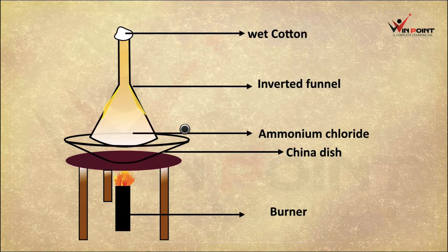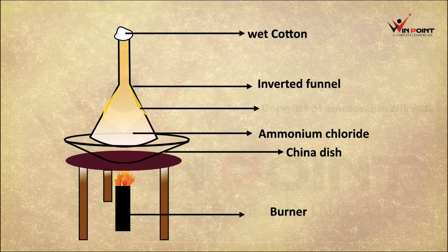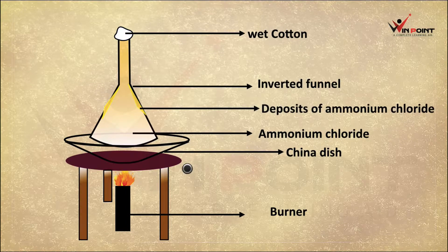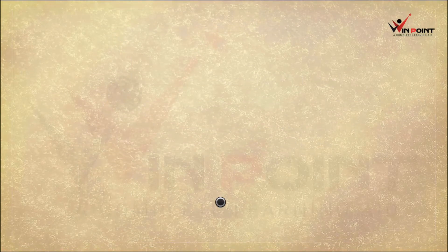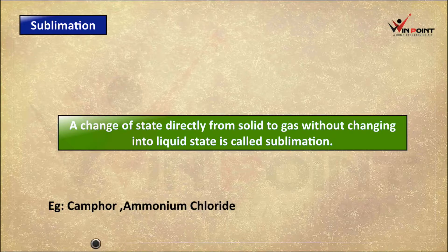The name of the process is the same. The conversion of solid into gas is called sublimation, and the conversion of gas into solid directly is also called sublimation — both are sublimation. A change of state directly from solid to gas without changing into liquid state is called sublimation. Examples are camphor and ammonium chloride.